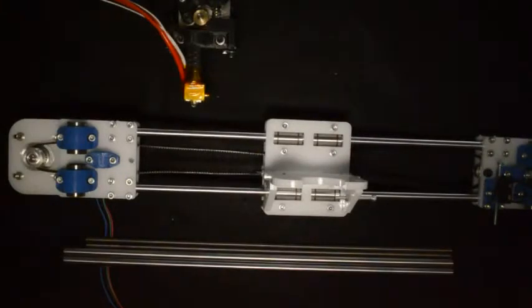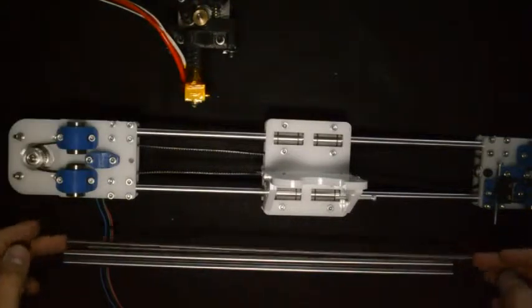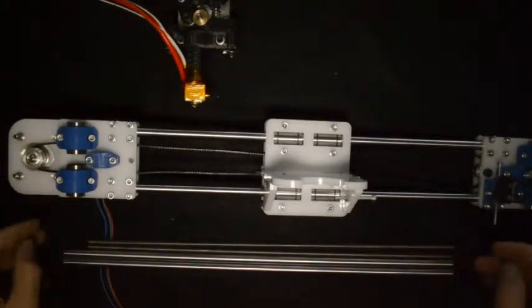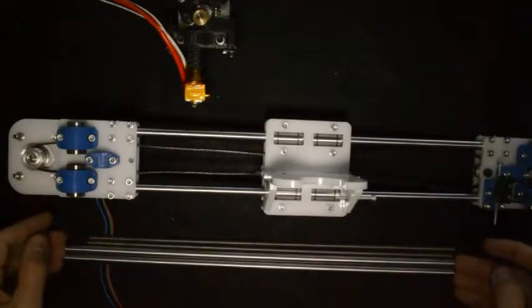For the last step of the Z carriage, what you'll need is the extruder that you assembled previously, the two M5 threaded rods and also the two linear rods.